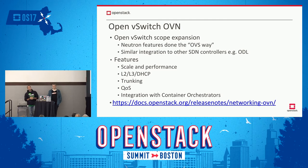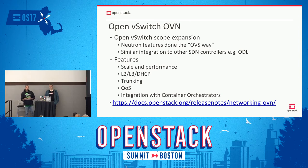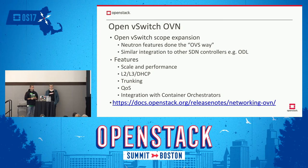From an integration standpoint into Neutron, the integration is somewhat similar to what OpenDaylight has done, in the form of an ML2 mechanism driver. One of the tenets at the inception of OVN was to scale and perform much better than the existing agent-based OVS implementation. Whether that will end up being true over time, we'll have to see because the project is still relatively new, but the community has shown a promising start. There is still a feature gap between the agent-based OVS implementation and OVN, but they do provide L2, L3, and DHCP services, as well as a trunking API implementation and quality of service.